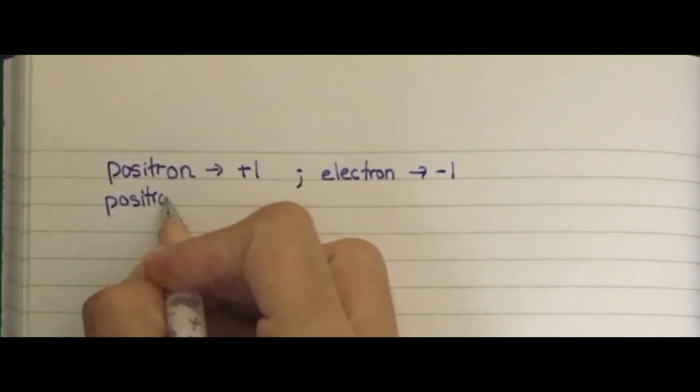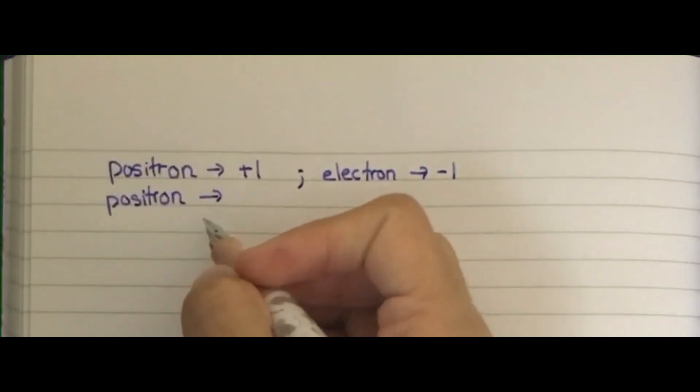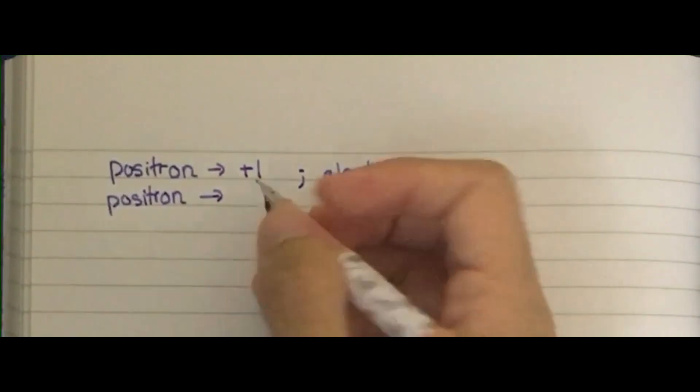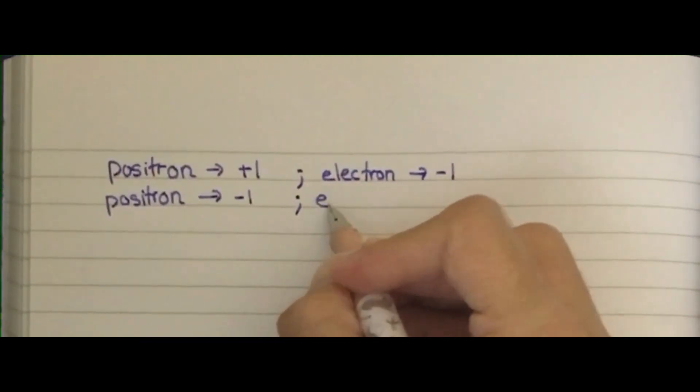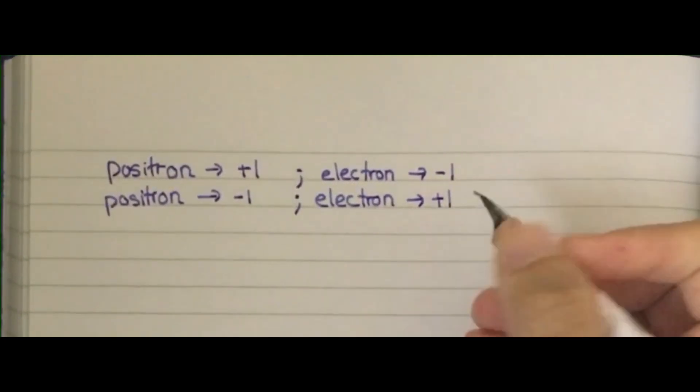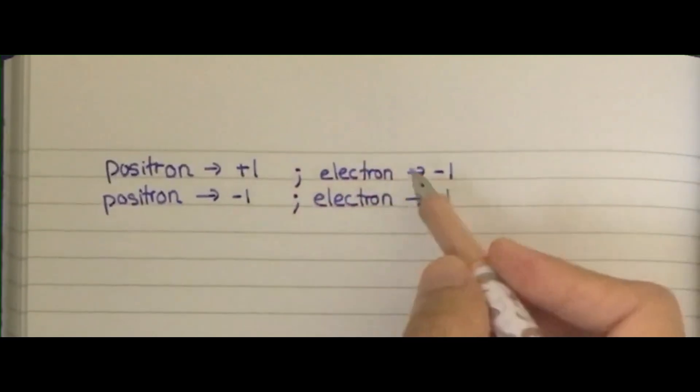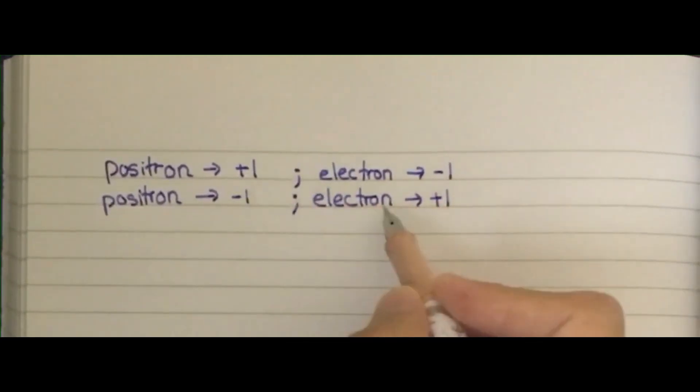Positron has a lepton number which is negative one, and electron has a lepton number which is positive one. So we can see that either in the charge or in the lepton number, they are opposite.